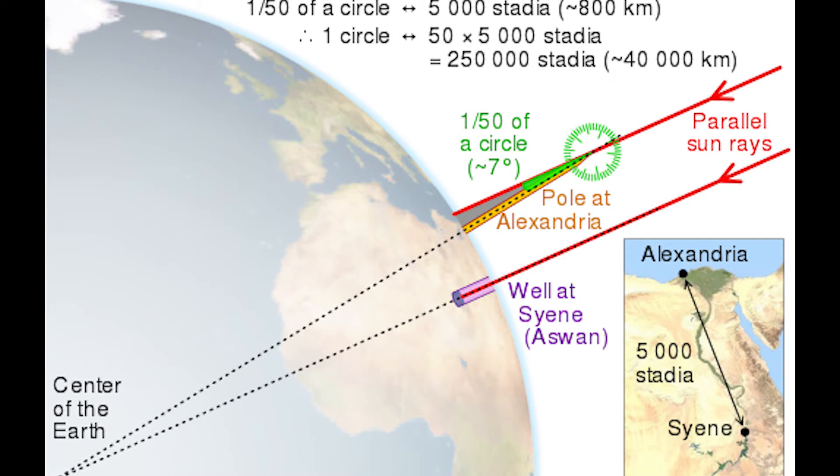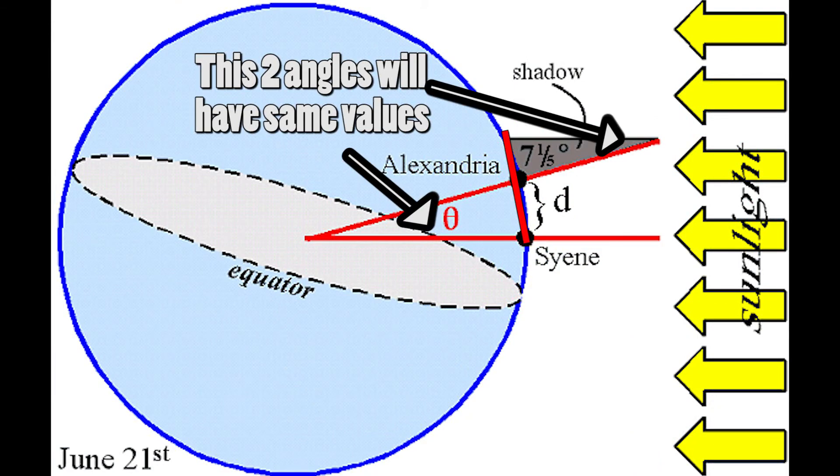The first at Syene directly connects the center of the earth, but at Alexandria, deflection in angle because the Sun is not directly overhead. So we can find the angle between the beam of the light as a shadow. We can easily prove that these two triangles are similar, and hence these two angles are equal.